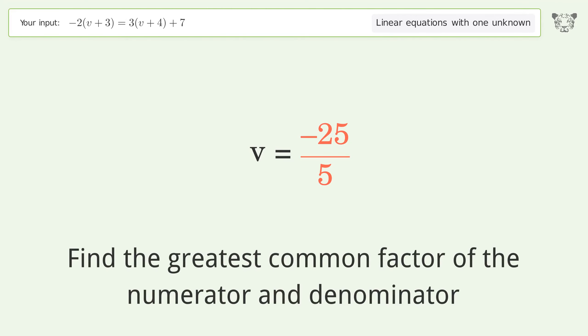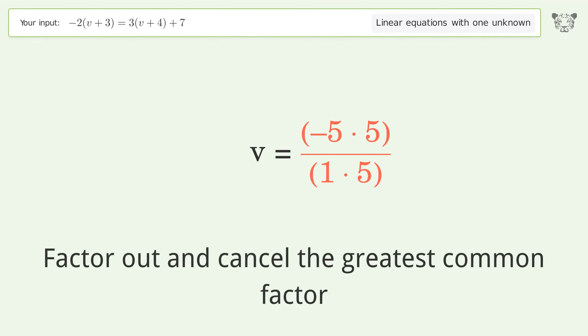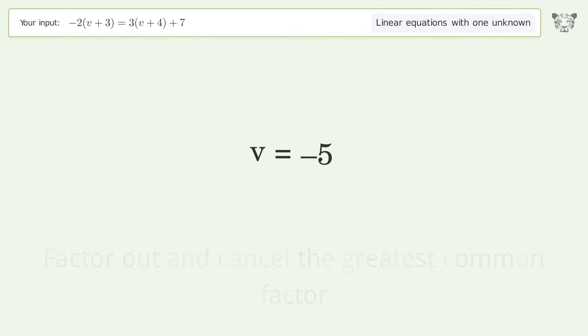Find the greatest common factor of the numerator and denominator. Factor out and cancel the greatest common factor. And so the final result is v equals negative 5.